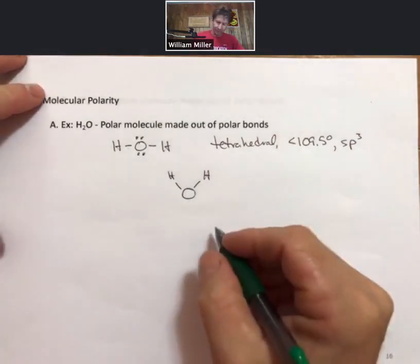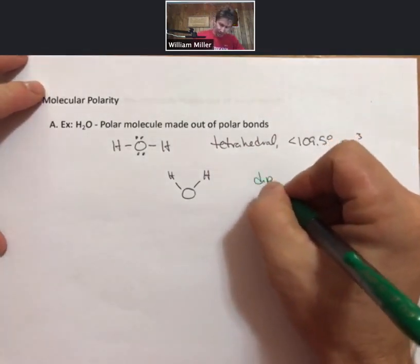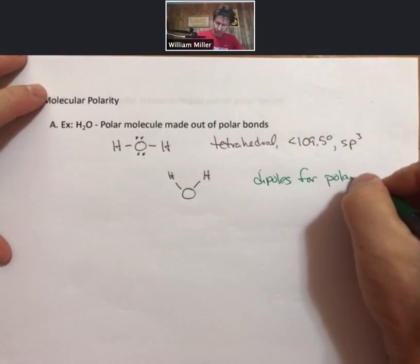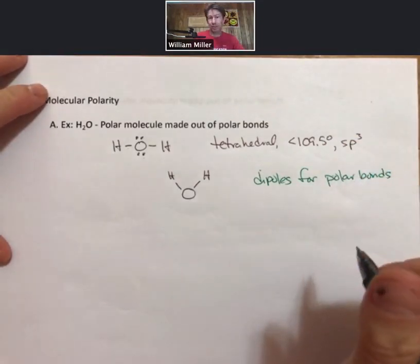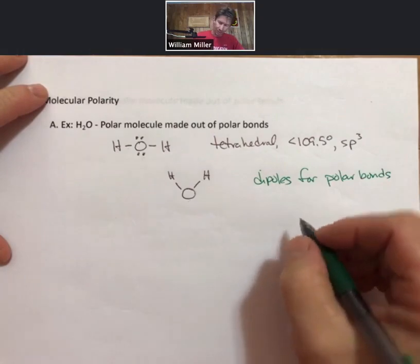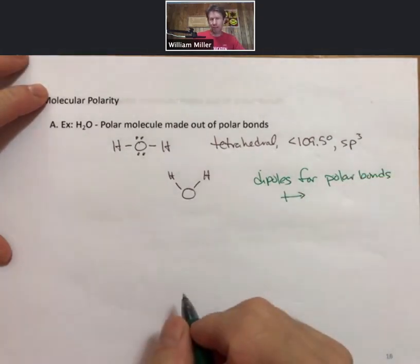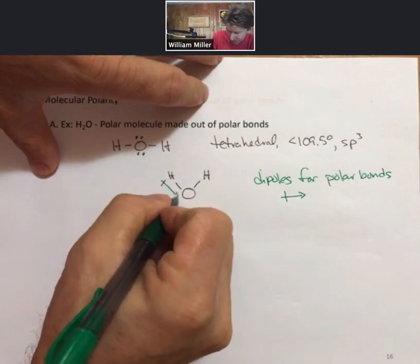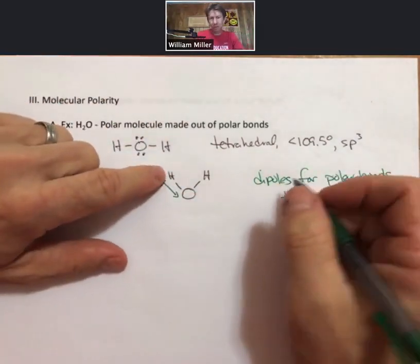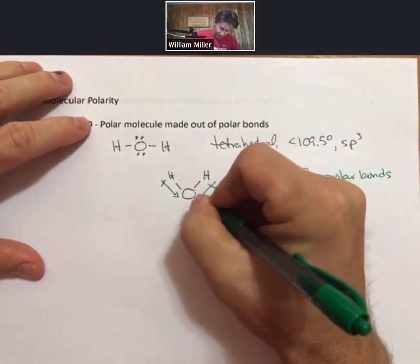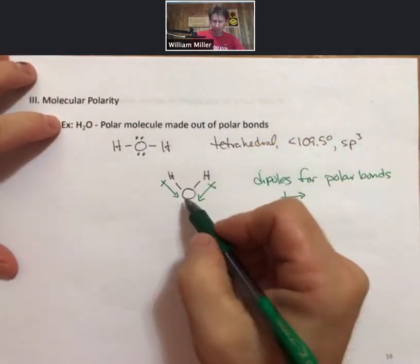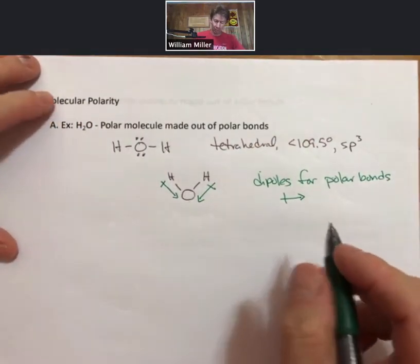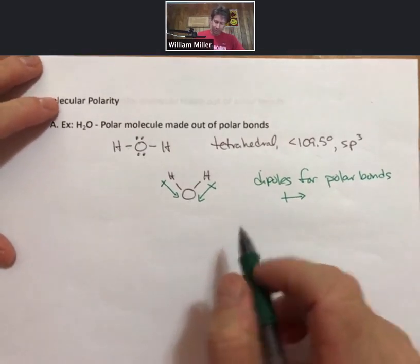The next thing is we're going to draw dipoles, and you draw dipoles for polar bonds. Polar bonds are, of course, bonds in which there's a difference in electronegativity. The way that I'm going to draw each dipole is with a plus arrow. That plus arrow is going to be pointing towards the oxygen, and the plus is going to be closest to the hydrogen. These should be identically sized arrows because they have the same two atoms in each of the bonds, and so they should have the same size dipole.